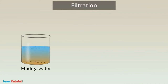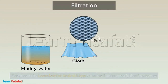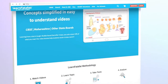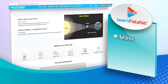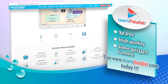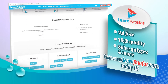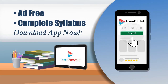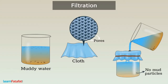Filtration. How do you get clean water from muddy water? You can use a piece of cloth for this purpose. The cloth has very fine pores between the woven threads. It blocks the passage of mud particles but allows water to pass. Thus, we get water free from mud particles. This is called filtration.